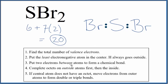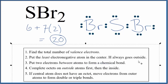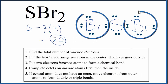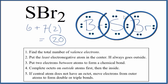We have 20 electrons total. Let's complete the octets on the outside atoms — the bromines. Now we'll complete the octet on the inside atom, the Sulfur. At this point we've used all 20 valence electrons. Each bromine has eight valence electrons — that's an octet. The Sulfur also has eight valence electrons.